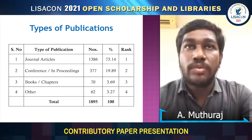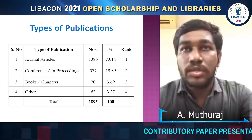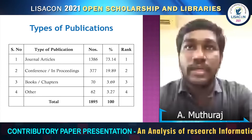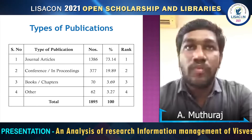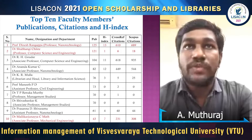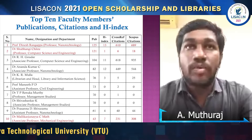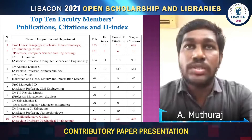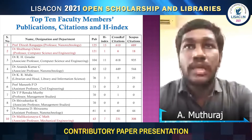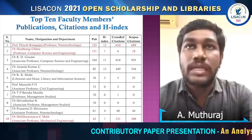Table 4 shows types of publications. VTU has published 1,895 publications, with the majority — 1,383 — published as journal articles, followed by 377 articles in conference proceedings. Table 5 shows the top-10 faculty members by publications, citations, and h-index. Prof. Dinesh Rangappa, Professor in the Department of Nanotechnology, has published 125 publications with a 13 h-index and received 610 citations from Google Scholar and 689 citations from Scopus.